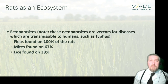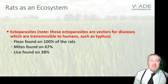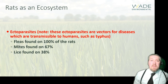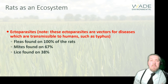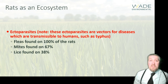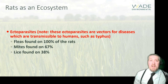Rats themselves are part of an ecosystem with ectoparasites abounding in huge numbers. Fleas were on almost 100% of the rats assayed, mites on two-thirds, and lice on a further third. These animals are known vectors of disease — fleas can carry Yersinia pestis, responsible for the plague. We might consider the plague confined to history, but it's still around today, still affecting many countries. There have even been notable cases recently in the United States. These diseases aren't just a problem elsewhere — they can realistically occur here in the UK given the right environment.